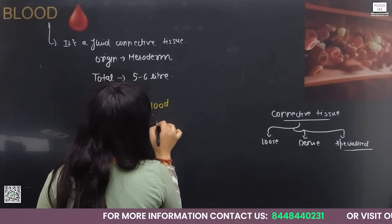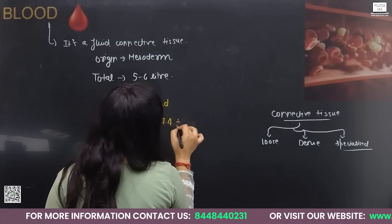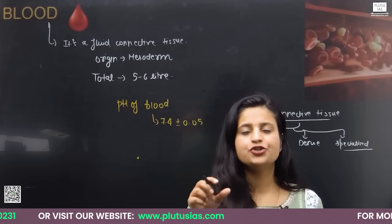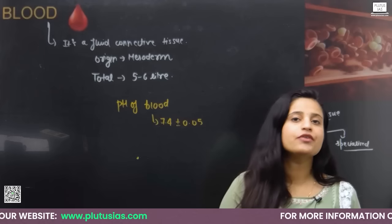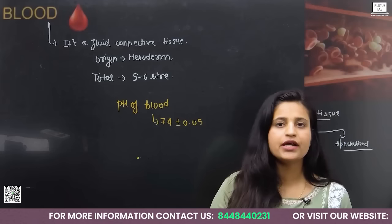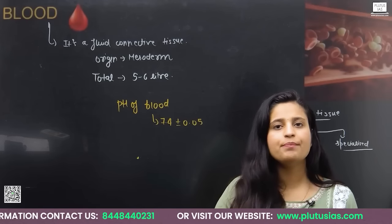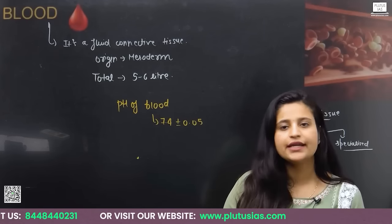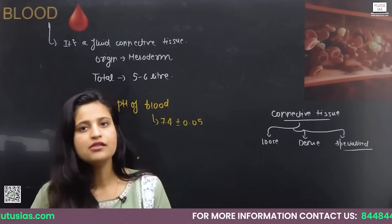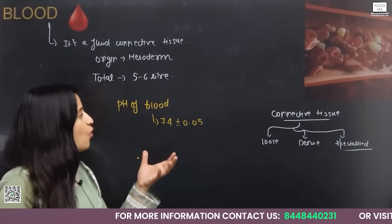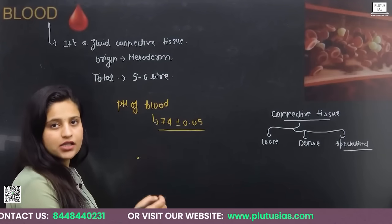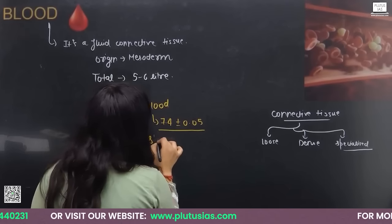We have a pH scale in which we measure the pH of anything. If the pH is less than 7, we consider the substance acidic. If the pH is above 7, it is basic or alkaline. If the pH is around 7, it is neutral. So the pH of blood is 7.4 ± 0.05, and it is slightly alkaline.